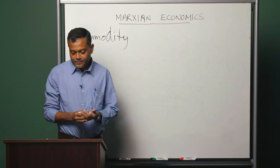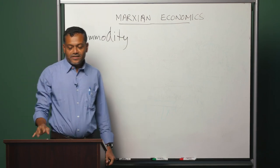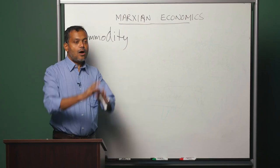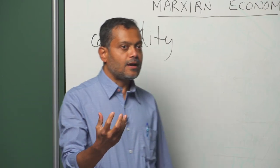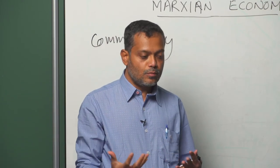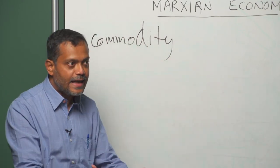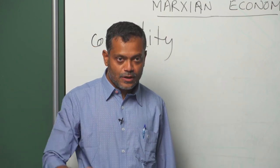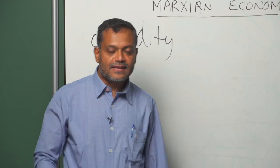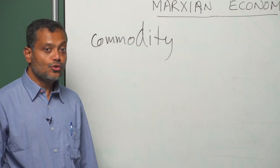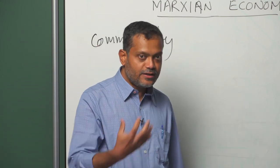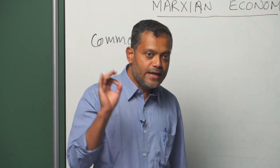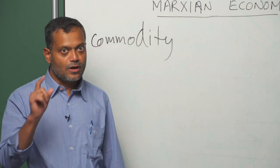What is a commodity? A commodity is anything which is produced for exchange. Roughly, whatever we consume, we either get it from somebody through the process of exchange or we produce it ourselves. Conversely, we can say that anything that we produce, we either produce for direct use or for exchange. So anything which is produced with the intention of being exchanged is a commodity.